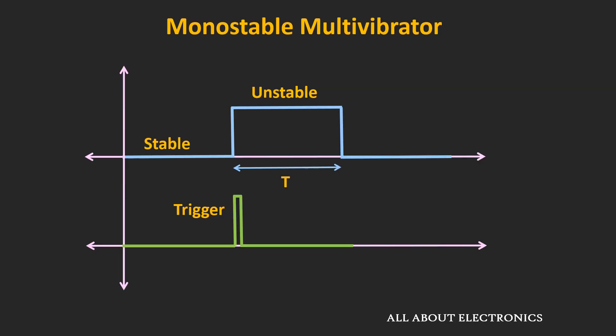In the case of a monostable multivibrator, one state is a stable state and whenever a trigger signal is applied, then momentarily the output goes into the unstable state. And after some time t, it comes back into the stable state. So if the stable state is a low state, then whenever the trigger signal is applied, the output momentarily goes into the high state.